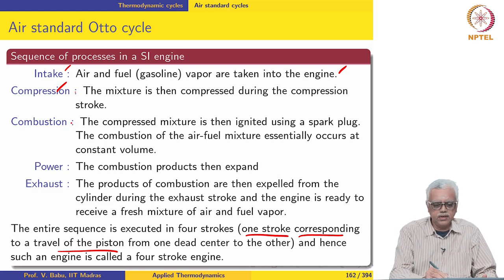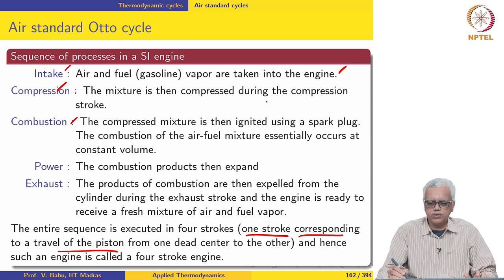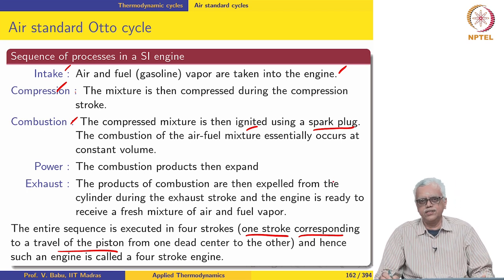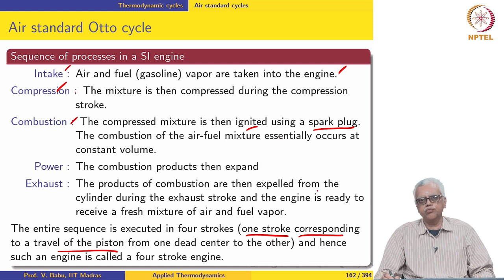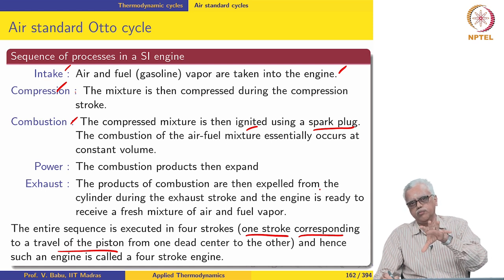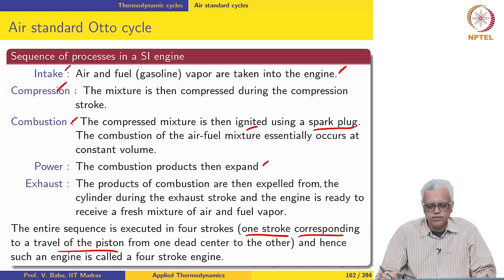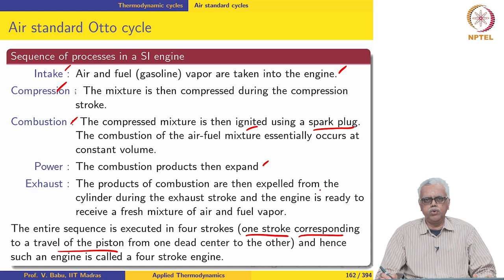Towards the end of the compression stroke and before the beginning of the next stroke, the compressed mixture is ignited using a spark plug — hence the name spark ignition combustion engine. The mixture is ignited and the combustion front travels outward from the spark plug into the mixture, pushing the piston down. That is the power stroke.